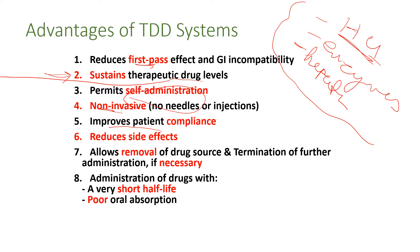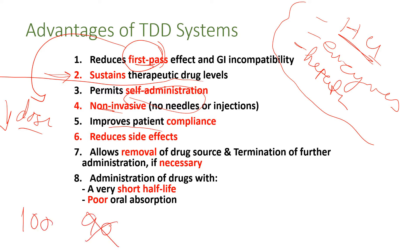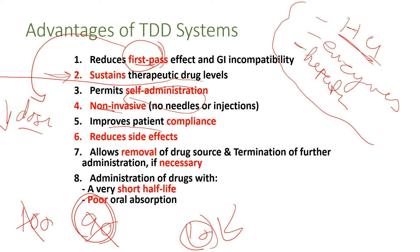Regarding side effects: because there is no first pass effect, we can reduce the dose. For example, if a patient is supposed to take 100 mg orally but 90 mg are degraded by first pass effect and only 10 mg are absorbed — bioavailability is 10% — we are giving the patient 100 mg although they need only 10 mg. In case of transdermal, there is no first pass, so we only need to apply 10 mg on the skin. Giving a lower dose leads to reduction in side effects, because we are giving the needed amount only with no excess drug or metabolites.